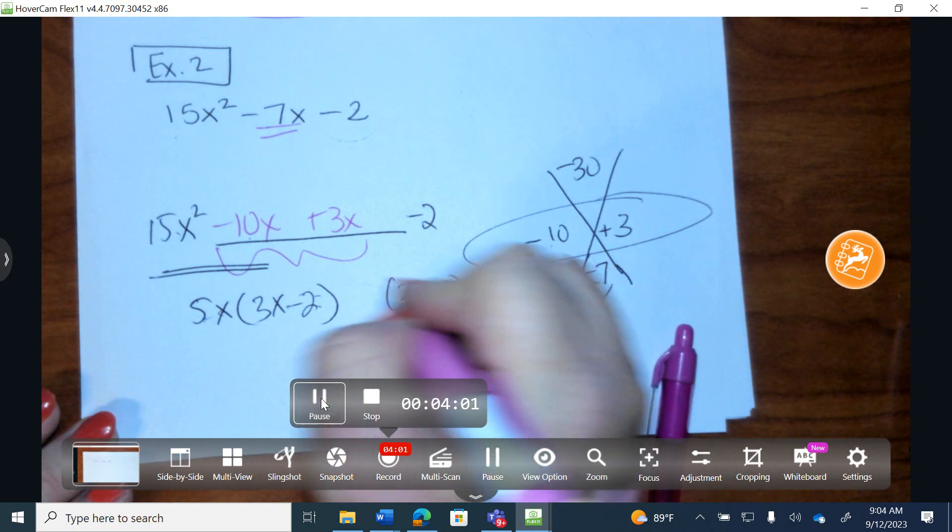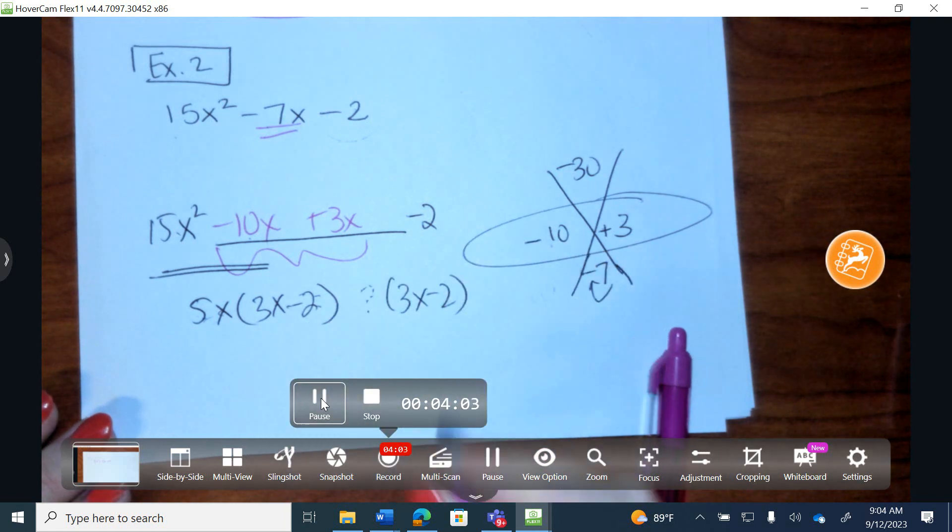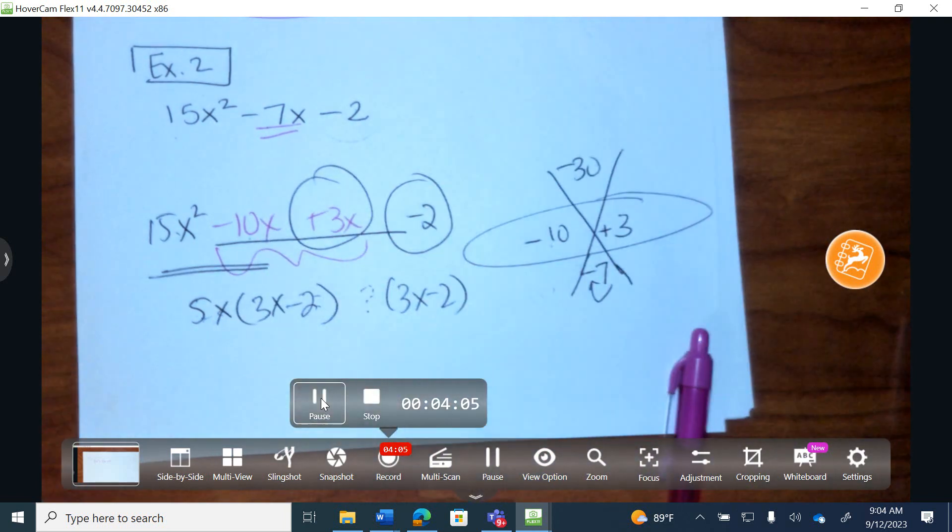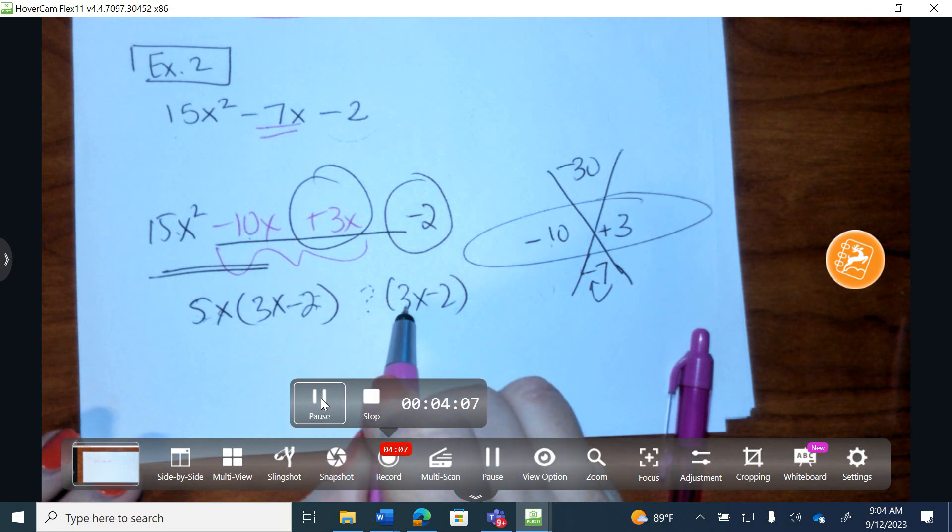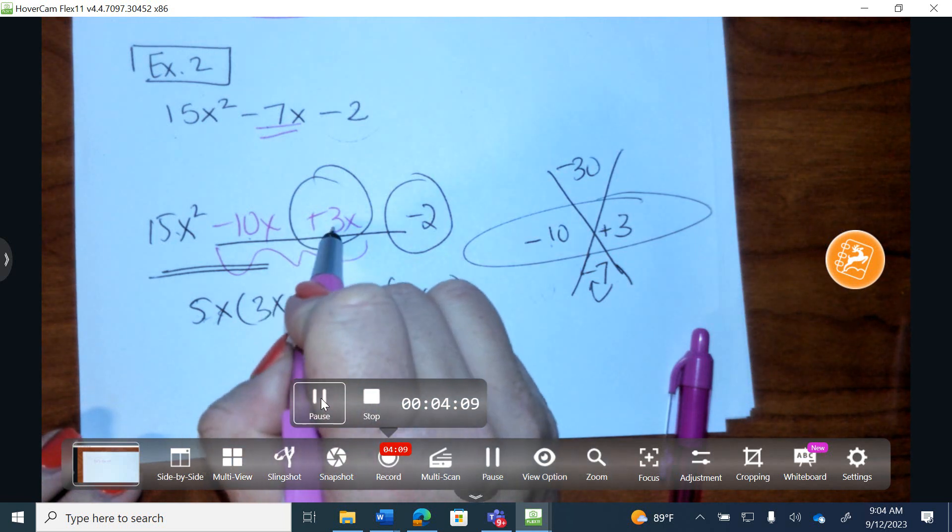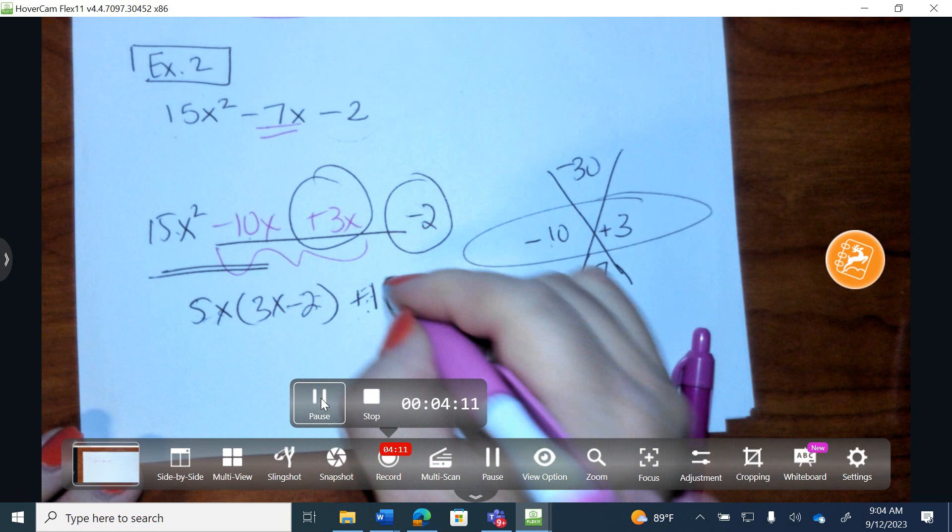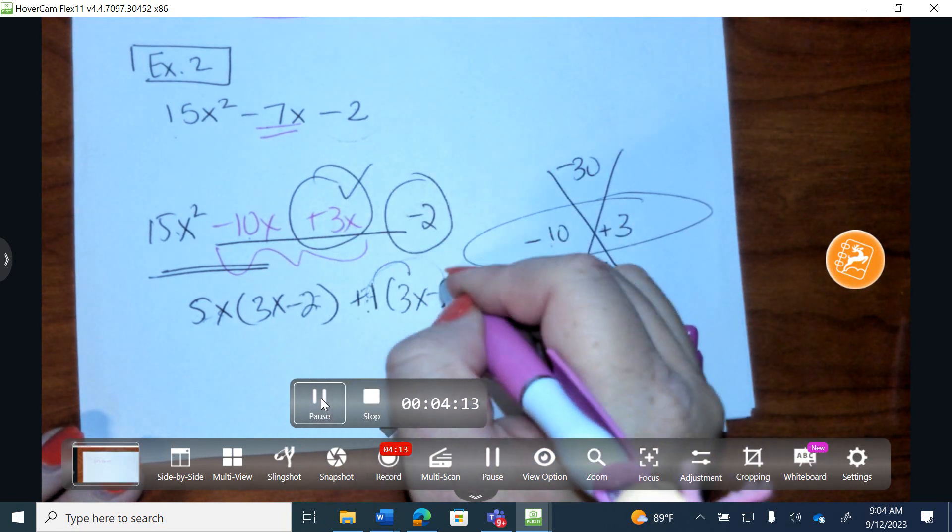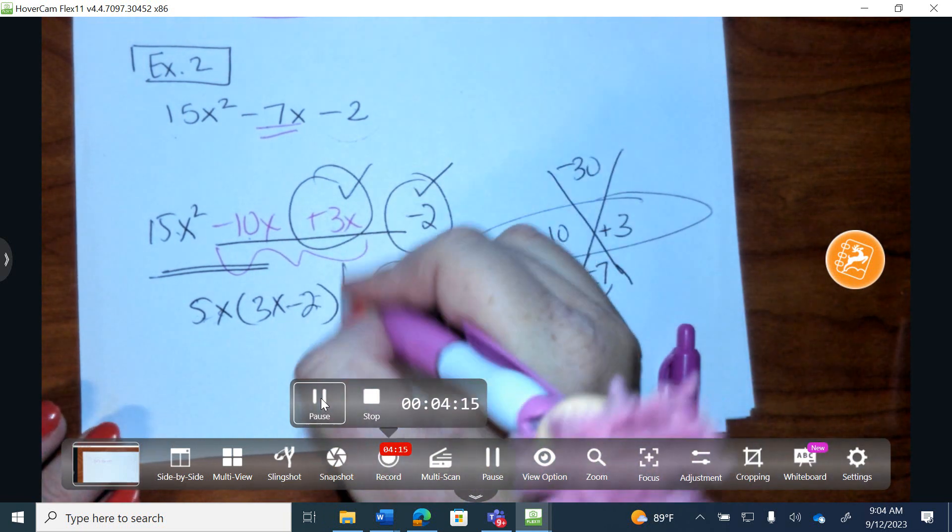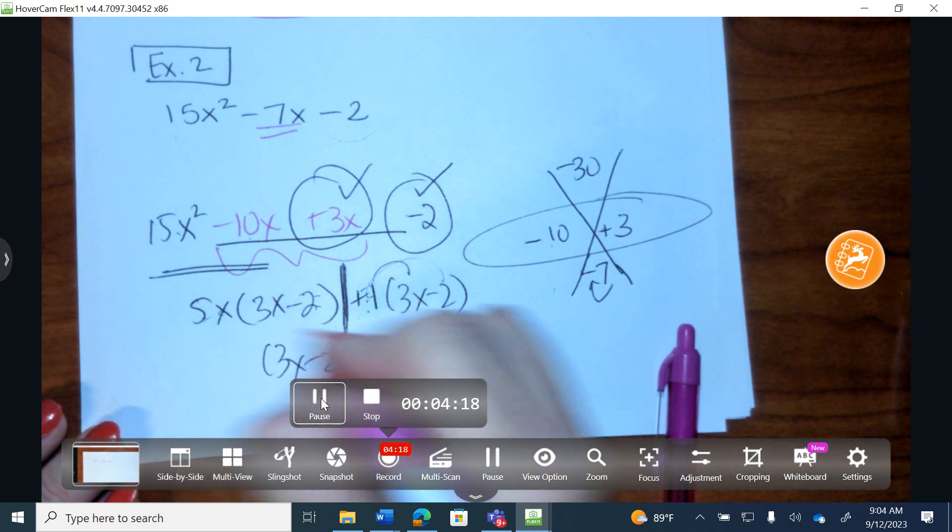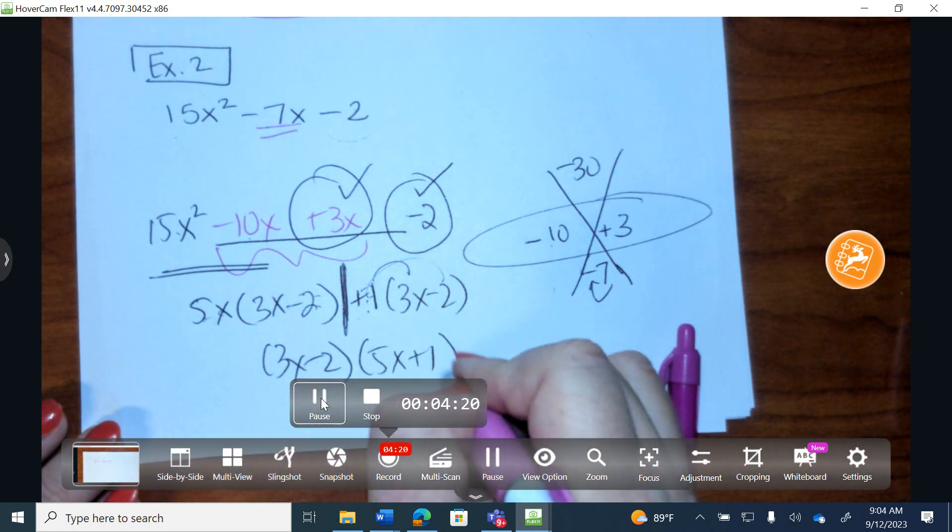Write down whatever is in parentheses with a little question mark in front. I'm going after the last two terms. What times 3x gives you a positive 3x? Don't forget the sign, it's a positive 1. Positive 1 times negative 2 is negative 2. What do they both have? 3x minus 2 and 5x plus 1.